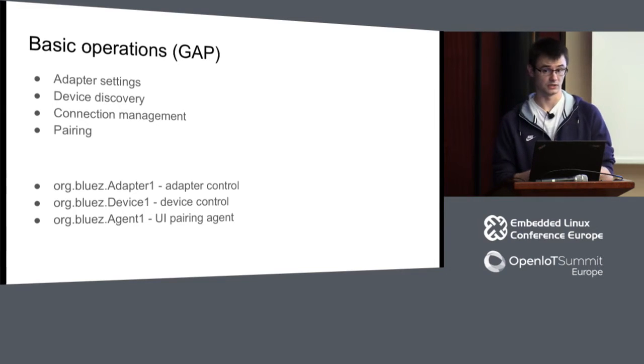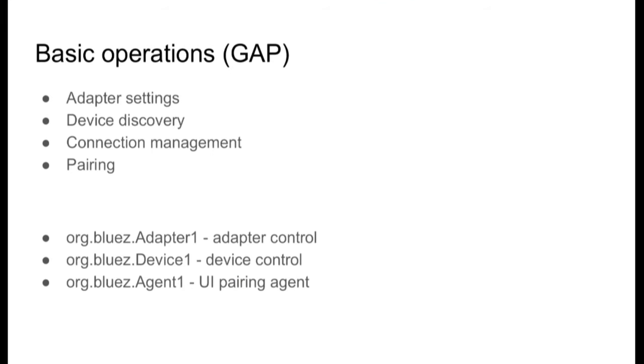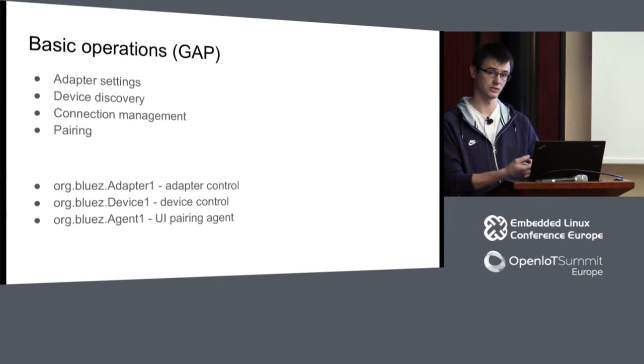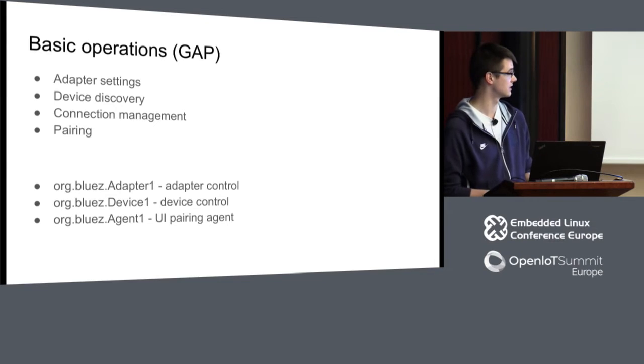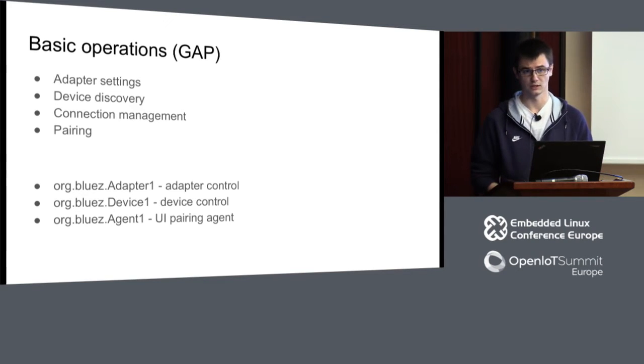What can you do with D-Bus APIs? You can control the adapter — powering on, setting connectable, discoverable, configuring name, and so on. You can start a discovery session to discover remote devices, manage connections — connecting and disconnecting — and there's a high-level API for pairing where all you need to care about is user interaction, not low-level details. Basic interfaces: Adapter1 for controlling the adapter, Device1 for device control on remote device objects, and Agent1 — the interface implemented by an external agent used by BlueZ for user interaction like confirming a passkey when pairing.